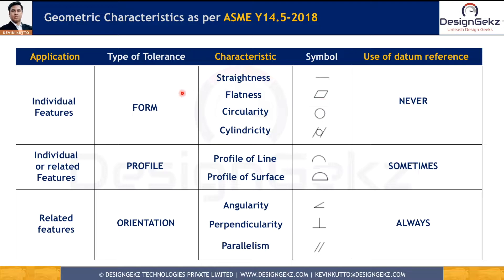The first group is Form Controls: Straightness, Flatness, Circularity, and Cylindricity. Form Controls never use datum references because we are controlling the form of the feature itself. Even Profile Tolerance can be used to control the form, and when it is used to control form, we never use a datum reference.